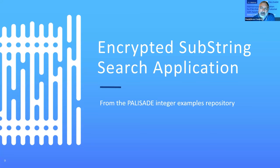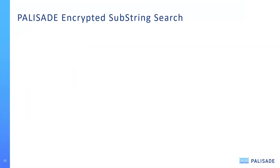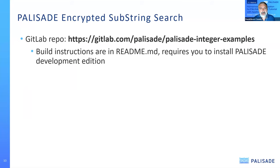Now I'd like to dive into an encrypted substring search application. String applications are a very good area for integer computation — encrypted integer computation. We've built a sample application in a GitLab repo with build instructions in the README. It requires installing the Palisade Development Edition, tested with the latest edition. It contains prototype C++ code running a BFV-RNS application, and it's a good exercise in showing how to use Palisade in a system.